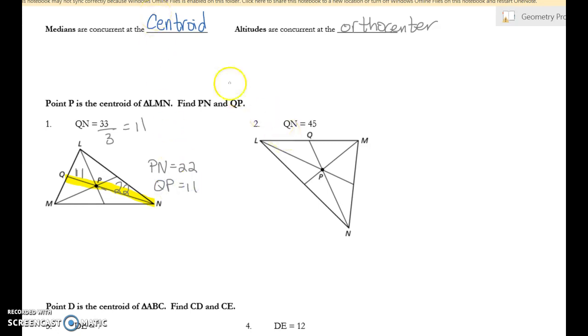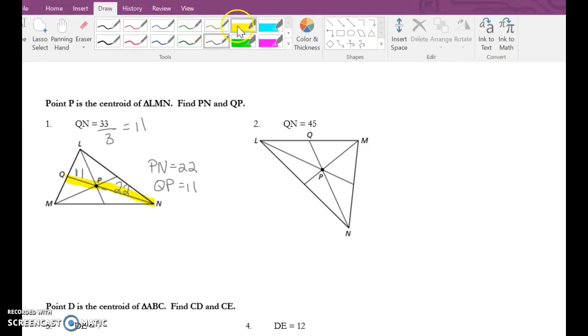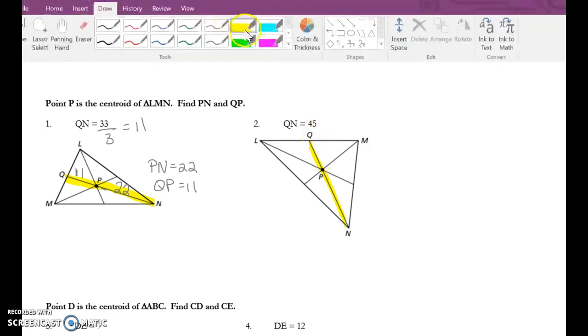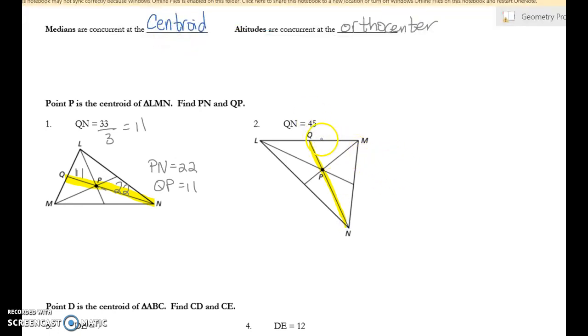Okay, let's try this next one. Q to N, that whole thing is 45. But again, it's going to be split into thirds, so I divide by three. And so that tells me this little piece is 15. So Q to P is 15, and P to N is two of those, so it's 30. So that's the basics of how you work. You find the length of the median, and then you divide it by three, and then you can find the one-third and the two-thirds.